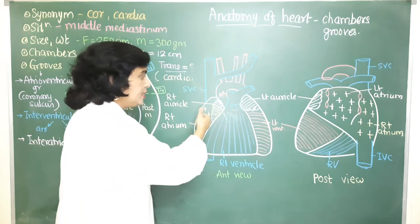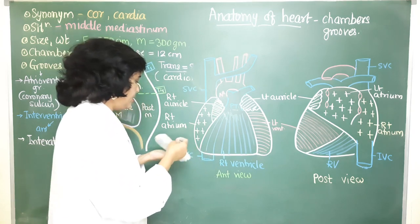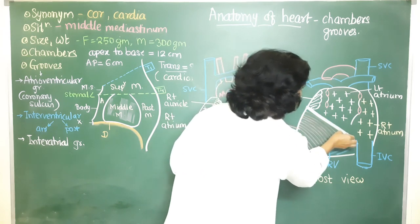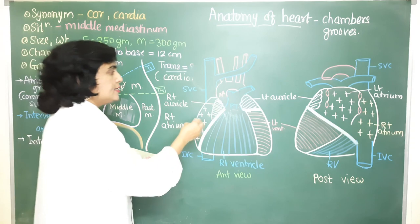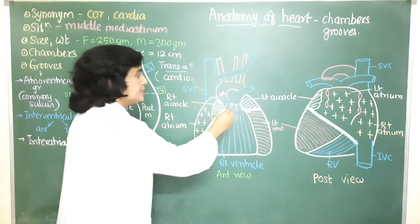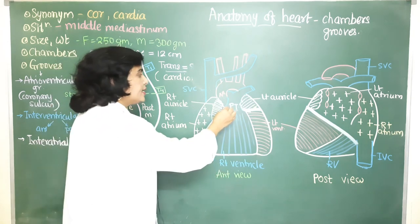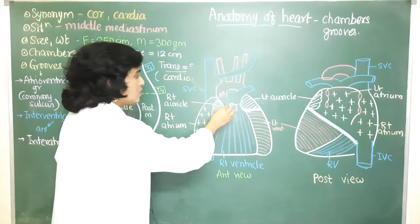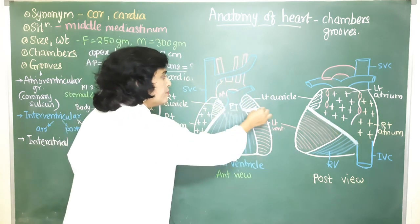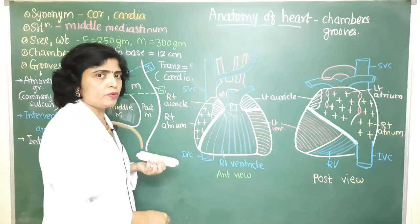The atrioventricular groove exists between the atria and ventricles. It is C-shaped — deficient anteriorly because of the pulmonary trunk, which is why it is not completely circular. It separates the atria from the ventricles and is divided into two parts: the anterior part seen from the anterior view, and the posterior part seen from the posterior view. The anterior part is further divided into right anterior and left anterior atrioventricular grooves due to the presence of the pulmonary trunk.